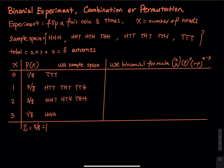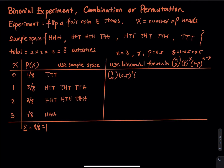The binomial formula starts with a combination: n equals three trials, x is the number of heads, p is the probability of heads which equals 0.5, and the failure probability is 1 minus 0.5, also 0.5. For zero successes: 3 choose 0, times 0.5 to the 0 power, times (1 minus 0.5) to the (3 minus 0) power. I want you to write the exponent as three minus zero, not just three.